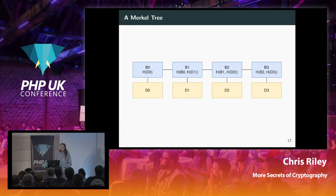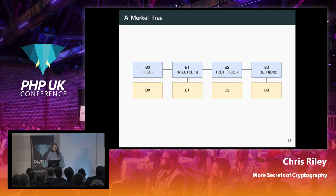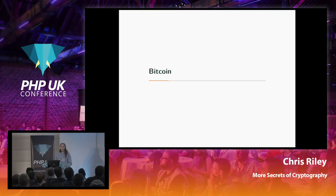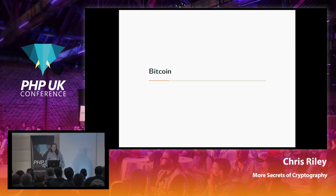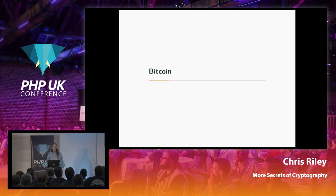This hash chain structure can also be used as the basis for a currency. Bitcoin takes the concept of a hash chain further to create what's known as a blockchain, and uses this blockchain to publicly store data about transactions between Bitcoin addresses.